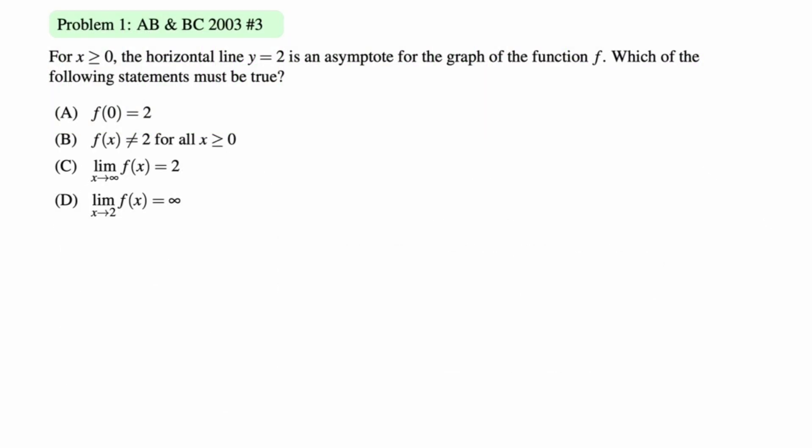Number one, for x greater than or equal to 0, the horizontal line y equals 2 is an asymptote for the graph of the function f. Which of the following statements must be true? Before I read the statements, I would just create kind of a graph, right? So we got a horizontal asymptote, we can approach it from the top or the bottom.